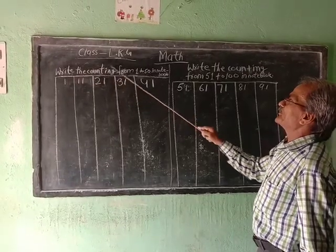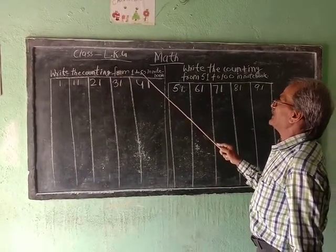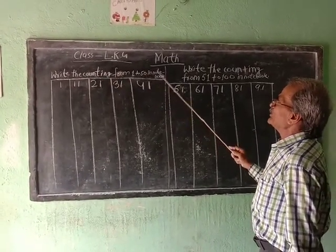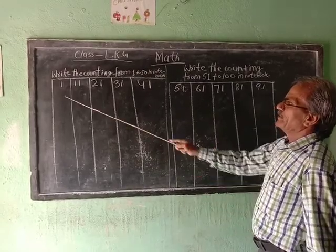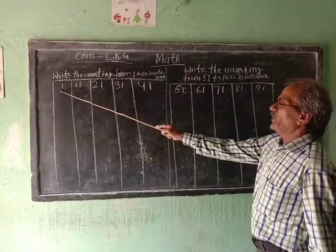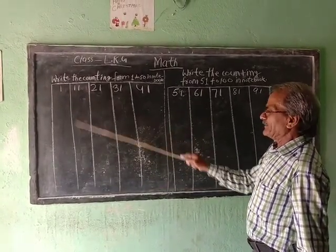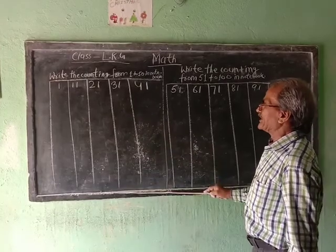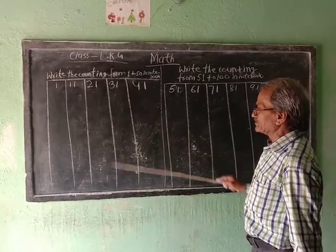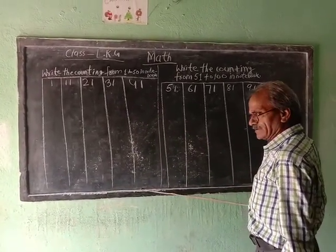Write the counting from 1 to 50 in Notebook. 1 to 10, 11 to 20, 21 to 30, 31 to 40, 41 to 50.